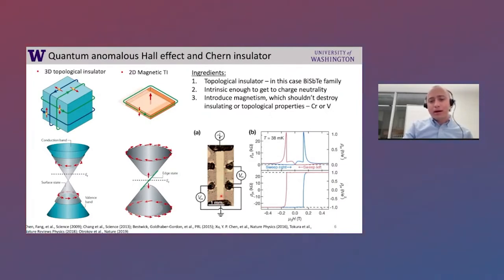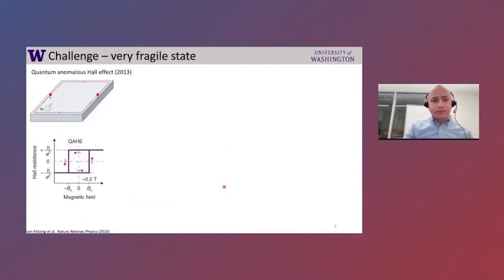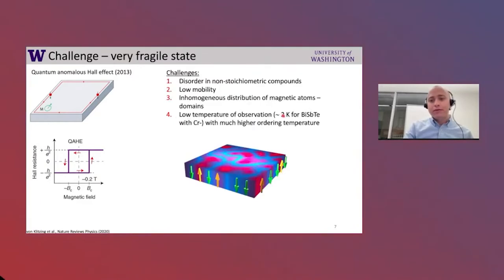Later, many groups reproduced these results — for example, the Goldhaber-Gordon group at Stanford. The sample is several millimeters in length and half a millimeter in width, a film grown by molecular beam epitaxy. When cooled to very low temperatures and with gate voltage tuning the Fermi level into the gap, you discover a beautiful ferromagnetic loop with quantized R_xy and essentially zero R_xx. The challenge is that this state is rather fragile: quantum anomalous Hall effect cannot be measured above two kelvin. The main challenges are related to disorder, since the material is not a stoichiometric compound — introducing magnetic ions creates disorder affecting mobility and Fermi level distribution.